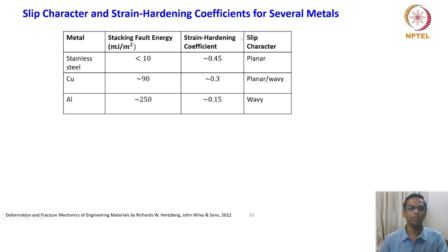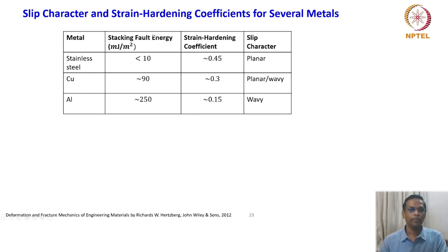When you compare these parameters, for example, if you look at this table where the stacking fault energy, strain hardening coefficient, and slip characters are all summarized for stainless steel, copper, and aluminum. What you have to notice here is the parameter stacking fault energy. We have already seen this, this is not new to us. We have sufficient background to understand what stacking fault energy is, which is expressed in millijoules per meter square.